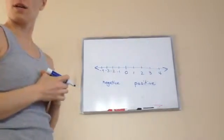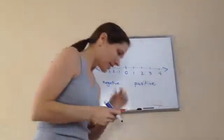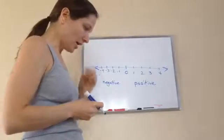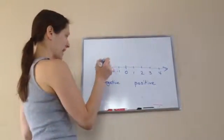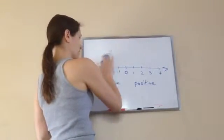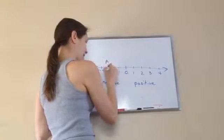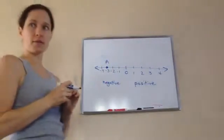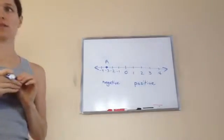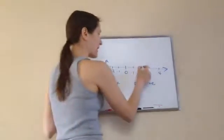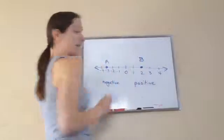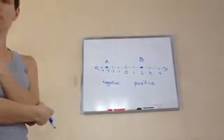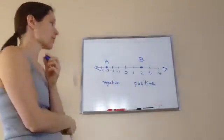Now, if I were to say point A, where is it located? It's located at negative three. Very good. Point B is located at positive two. Very good.